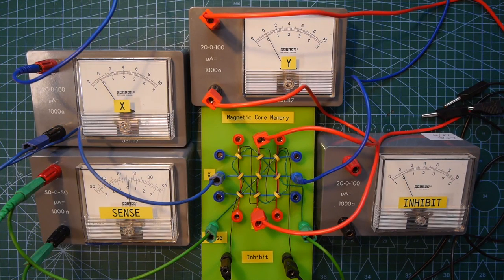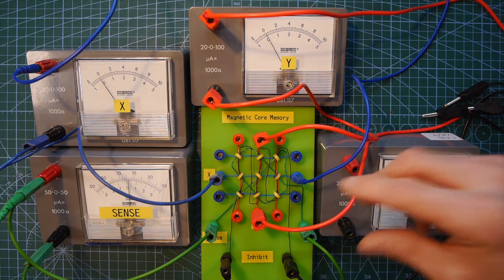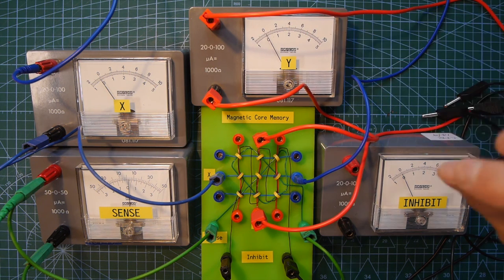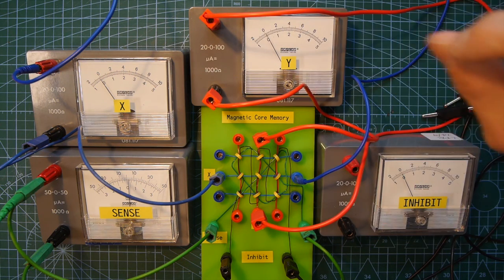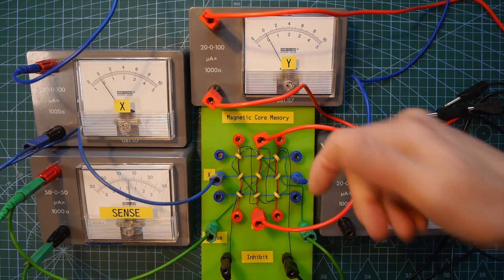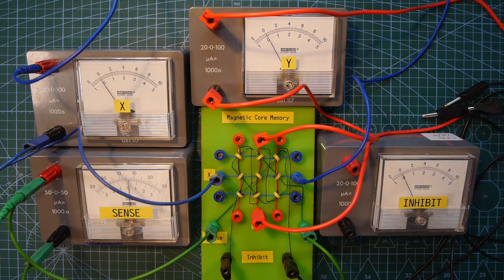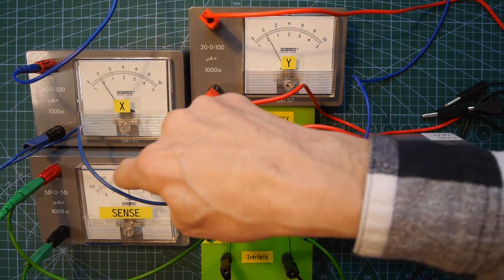So reading the data in a core is really interesting because it's actually a destructive process. If you remember, we've stored a one in that core. But in fact, to read it, what we do is we force it back to the zero state. If it was already at zero, then there's no change. So those currents have no effect. However, if it was in the one state, in other words, reverse magnetized, when we magnetize it back to the zero state, there'll be a change in magnetic field in that core. The change in magnetic field will induce a voltage on the sense wire. And because the sense wire is in a circuit, you will see a pulse.